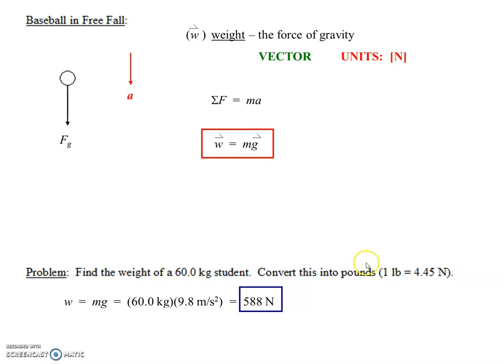Separately, you're going to convert this into pounds with this conversion factor. One pound equals 4.45 newtons. We do our usual unit conversion setup here, where we're going to multiply by the conversion factor, put newtons in the denominator to get rid of newtons in the numerator, and we should end up with 132 pounds.